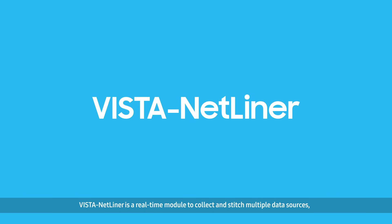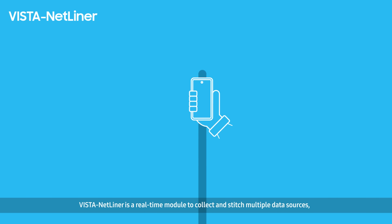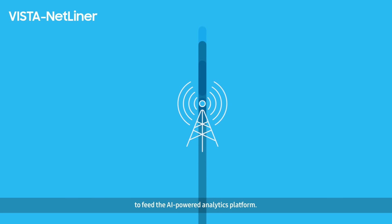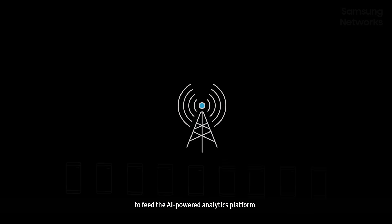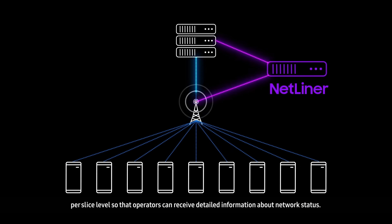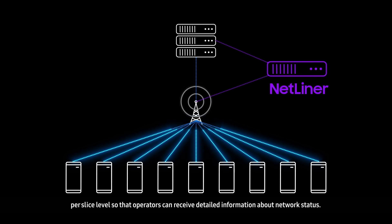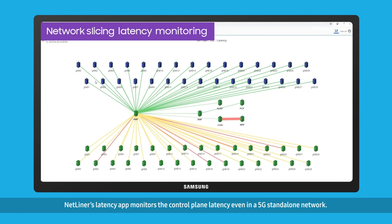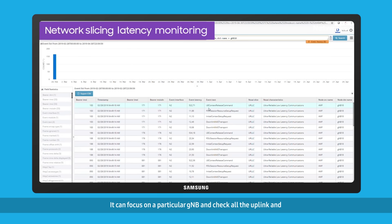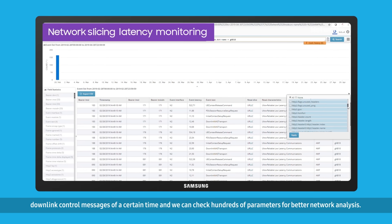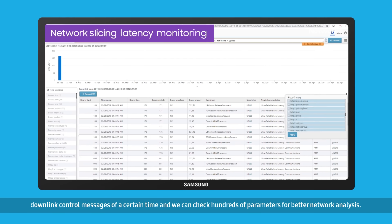Vista NetLiner is a real-time module to collect and stitch multiple data sources including call trace, CSL, and NDT to feed the AI-powered analytics platform. The solution also analyzes networks on a per-subscriber and per-slice level so that operators can receive detailed information about network status. NetLiner's latency app monitors the control plane latency even in a 5G standalone network, focusing on a particular gNB and checking all uplink and downlink control messages, with hundreds of parameters available for better network analysis.